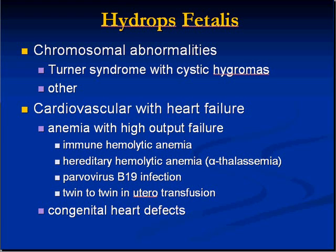Let's deal with the concept of hydrops fetalis. Hydrops means a lot of fluid, and fluid is usually associated with heart failure — we're talking about heart failure in fetuses. It's a fatal condition associated with chromosomal abnormalities; often kids with Turner syndrome have cystic hygromas and also have hydrops fetalis. Just as edema is the main hallmark of heart failure in adults, hydrops is the expression of heart failure in fetuses, and it's usually a high-output heart failure. The classical type involves hemolytic anemias — perhaps hemoglobinopathies, RH problems, or infections. The common denominator is a high-output heart failure.